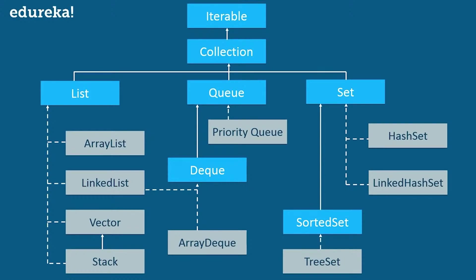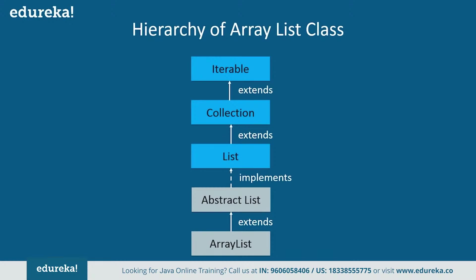Similarly, Deque is also an interface, so it extends and inherits the Queue interface. Now talking about ArrayList: it uses a dynamic array for storing the elements. It inherits the AbstractList class and implements the List interface. Then the List interface extends the Collection and Iterable interfaces in hierarchical order. So this is about the hierarchy of the ArrayList class.